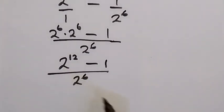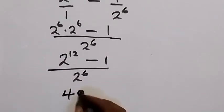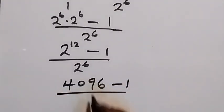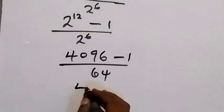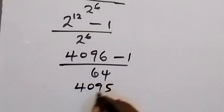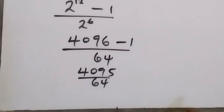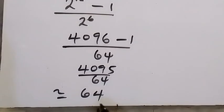Now, 2 raised to power 12 minus 1 over 2 raised to power 6: 2 raised to power 6 is 4096... so this becomes 4096 minus 1 over 2 raised to power 6. From the look of it, this is approximately 64, because 64 squared gives us 4096. Therefore, this problem is approximately 64.